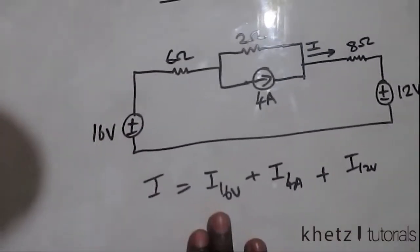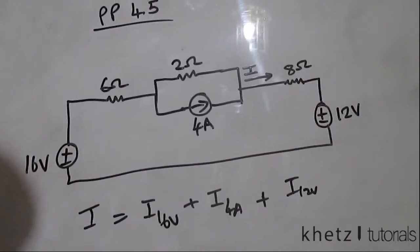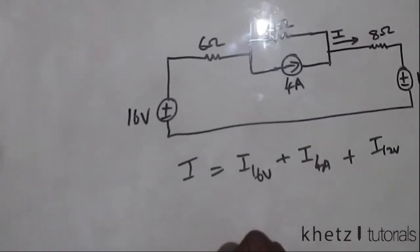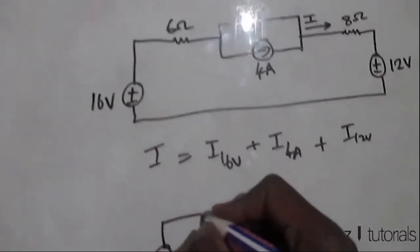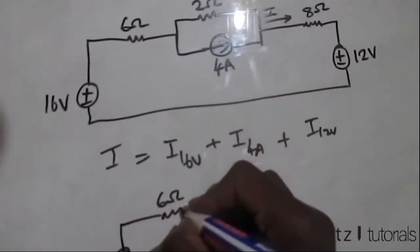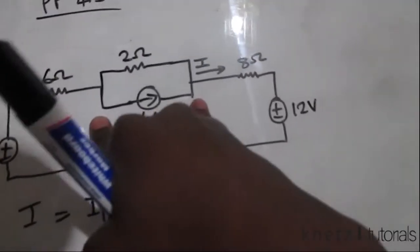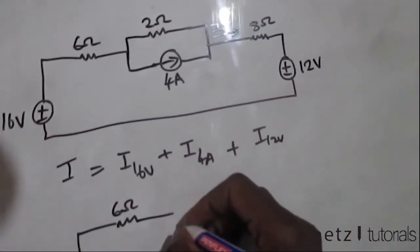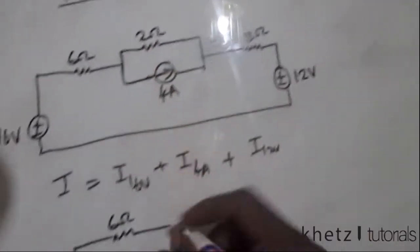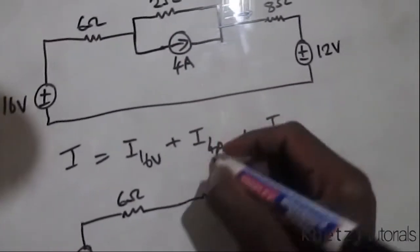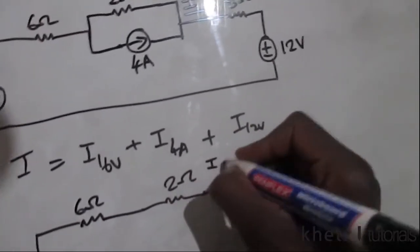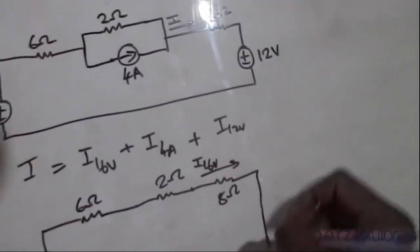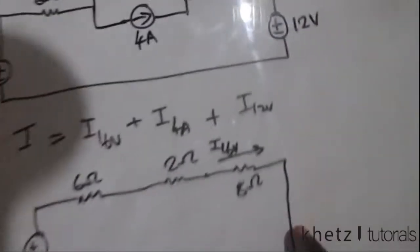Let's start with the 16 volt source and remove all the others. In superposition we deal with one independent source at a time. Taking the 16 volts, we have 6 ohms, and removing the 4 A source creates an open circuit, leaving that branch in series. This gives us 2 ohms, with i due to the 16 volt contribution going in that direction, 8 ohms still present, and a short circuit where the 12 volt source was removed.